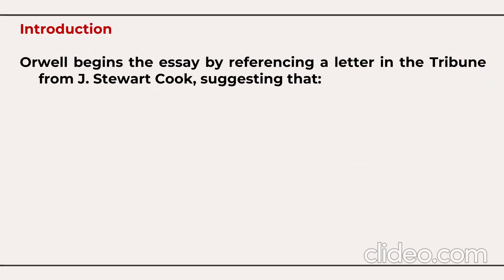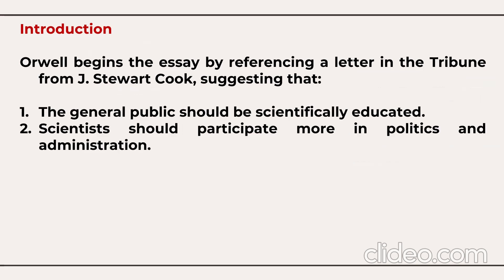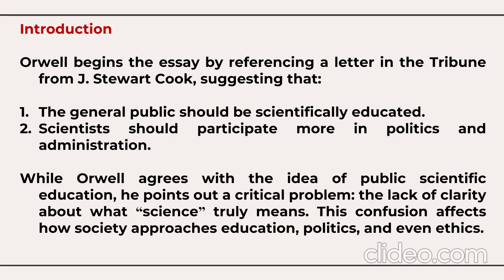George Orwell begins the essay by referencing a letter in the Tribune from J. Stuart Cook, suggesting that the general public should be scientifically educated and that scientists should participate more in politics and administration. He agrees with the idea of public scientific education but points out a critical problem: the lack of clarity about what science truly means. This confusion affects how society approaches education, politics, and even ethics.